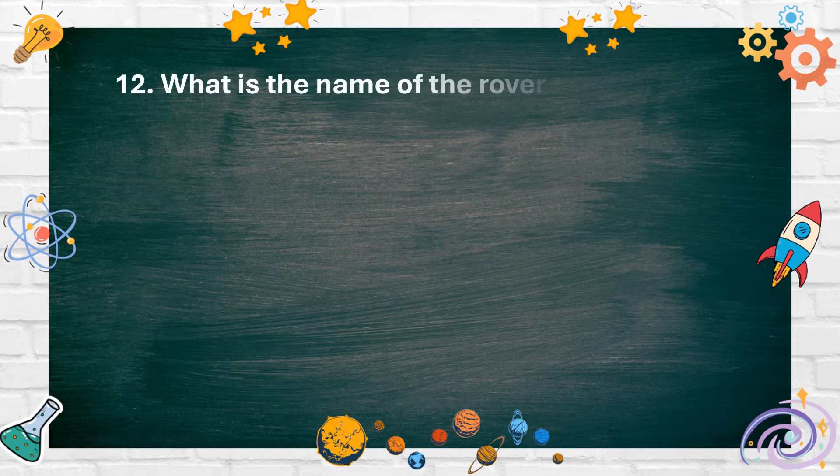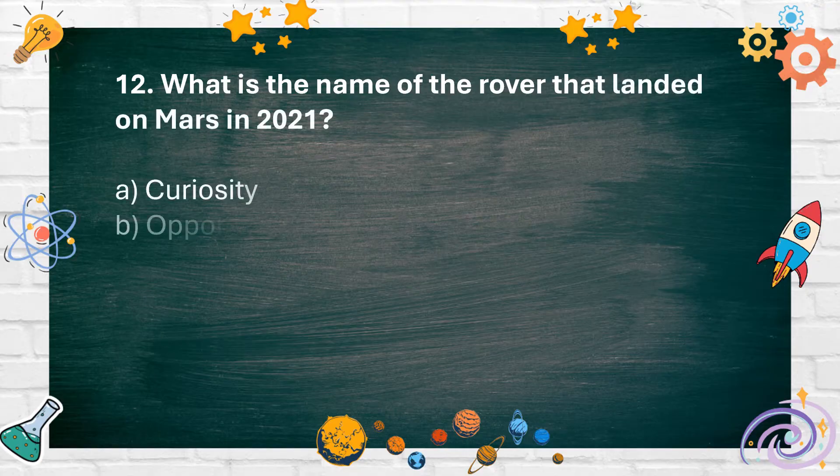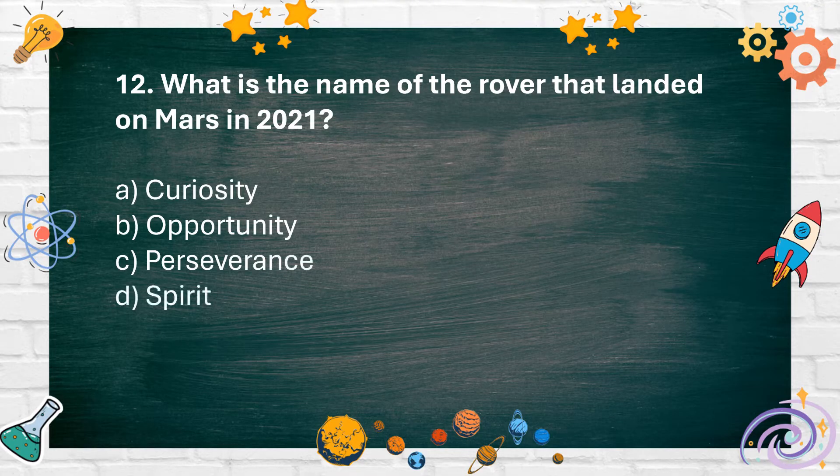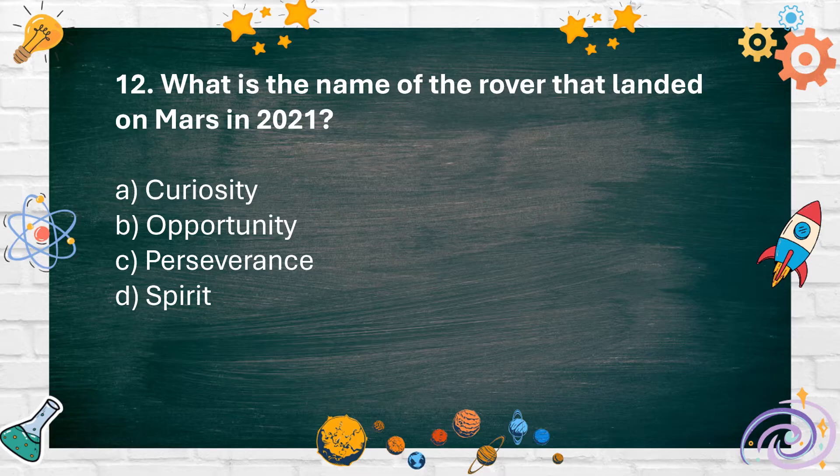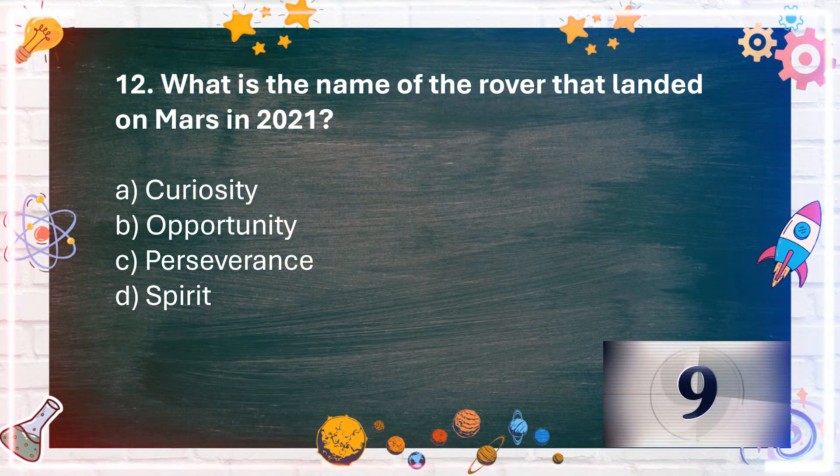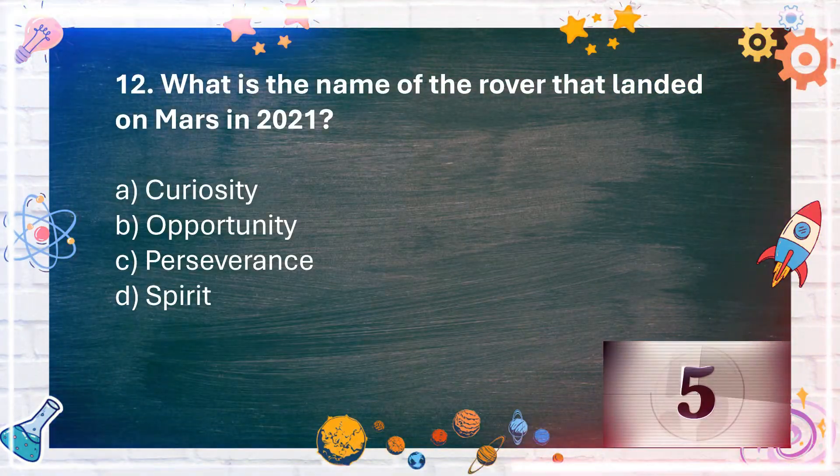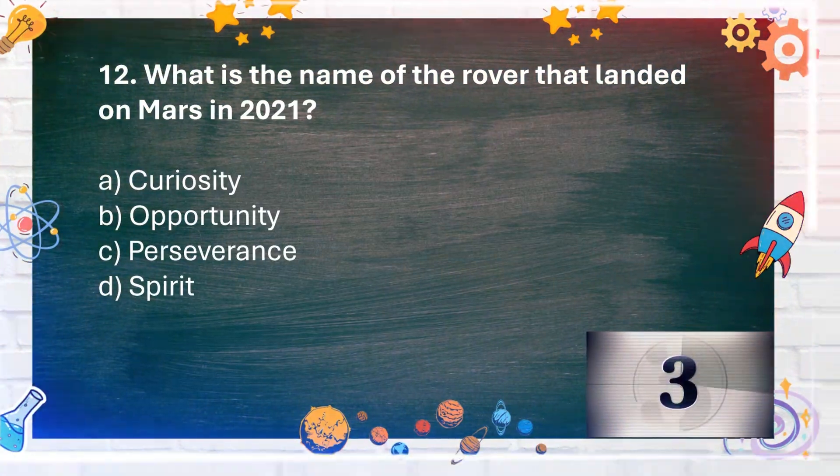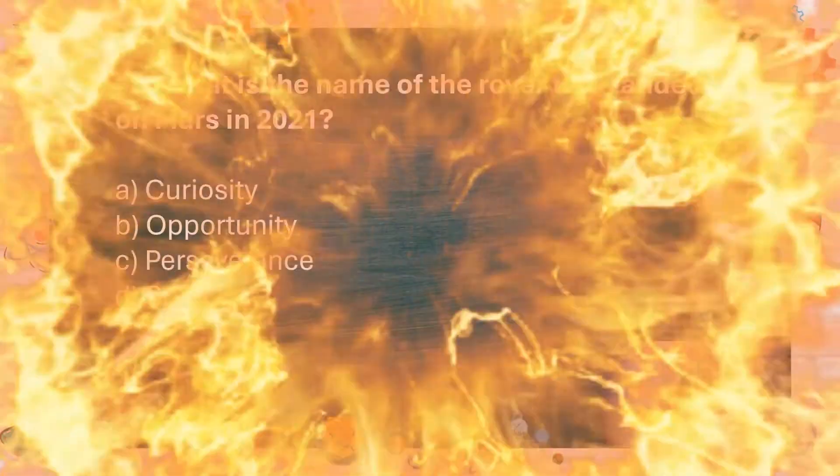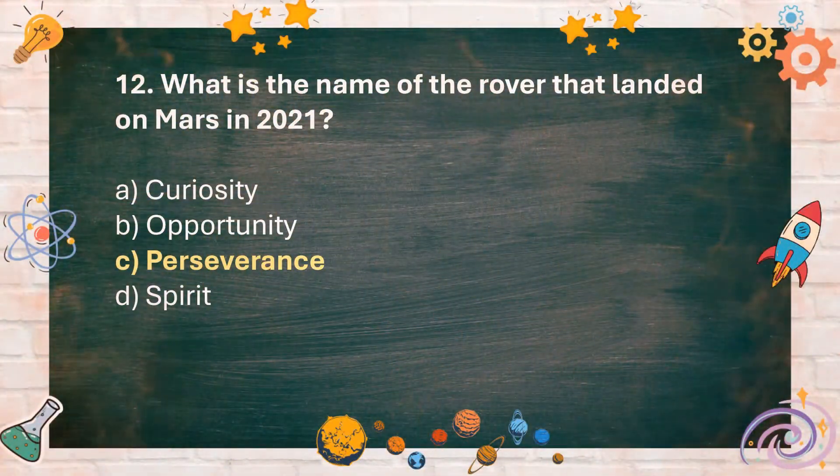Number 12: What is the name of the rover that landed on Mars in 2021? A. Curiosity, B. Opportunity, C. Perseverance, D. Spirit. The answer is C. Perseverance.